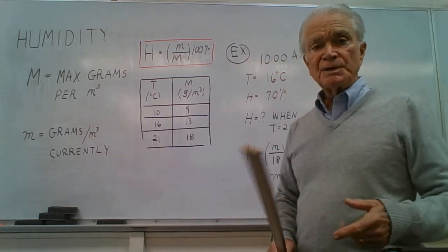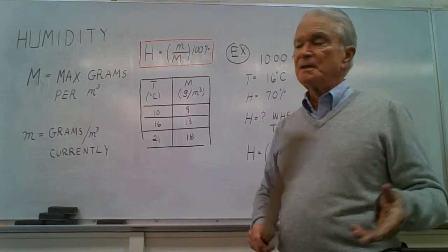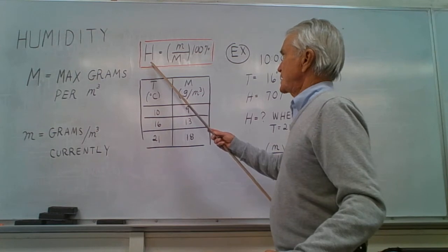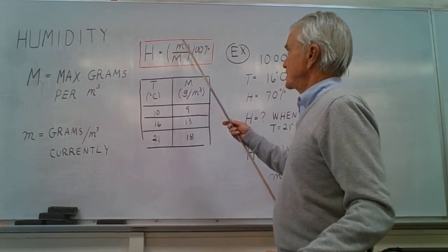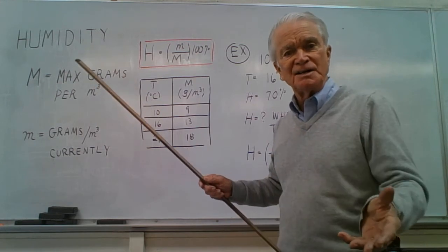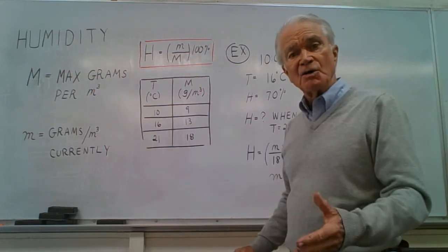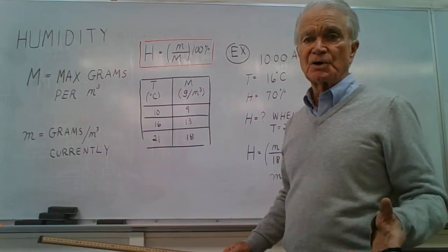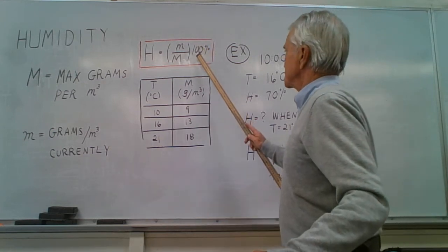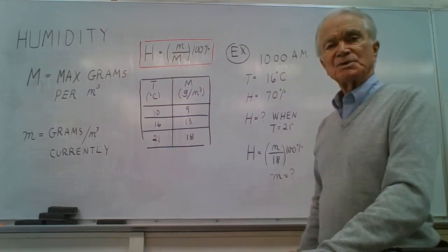To calculate the humidity, sometimes called the percent humidity, we symbolize it as H and it's the ratio of the current number of grams in each cubic meter of air outside to the maximum number of grams that are allowed before condensation will occur. Then you multiply times 100 percent to make this decimal fraction a percentage value.